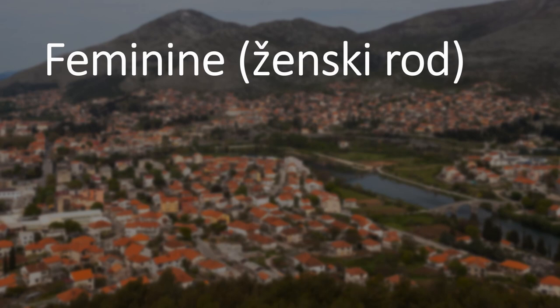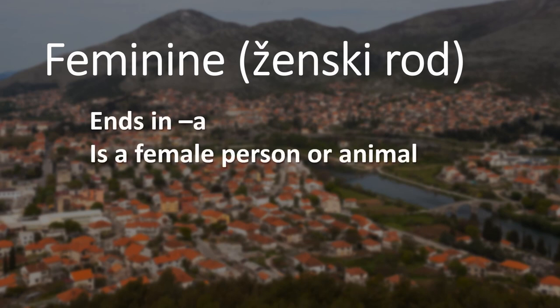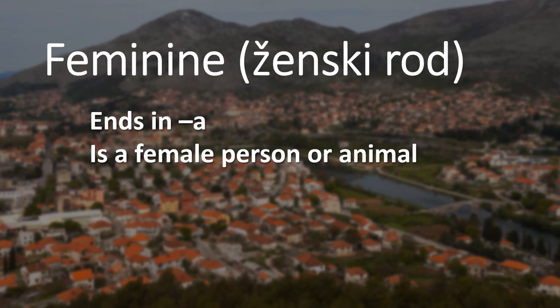Feminine, or ženski rod, usually ends in A. It refers to a female person, name, or in general, or an animal or object that ends in A. Examples include voda, meaning water, and mama, meaning mom. Both of these end in A and therefore are feminine, or ženski rod.